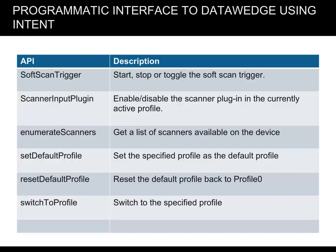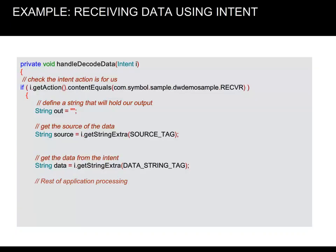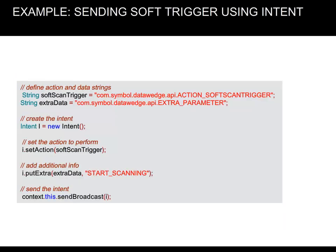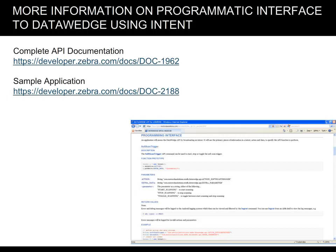Even though Data Wedge can be pre-configured for most of your needs, there may be occasions when you would want to modify its behavior during runtime. This can be achieved using Android intents as the ones shown here. Here's an example of receiving data using intent. Here's an example of sending a soft trigger using intent. Here are URLs where you can find more information on the programmatic interface to Data Wedge using intent.